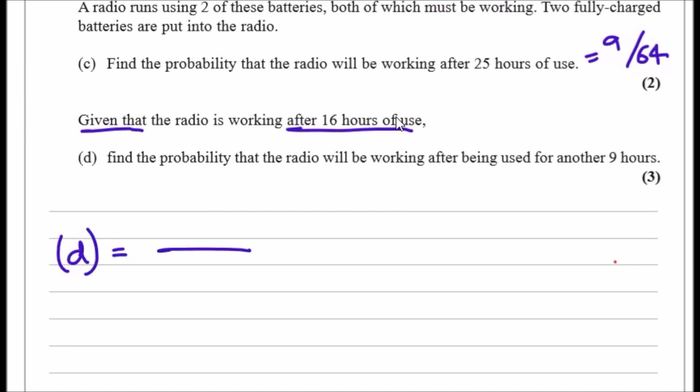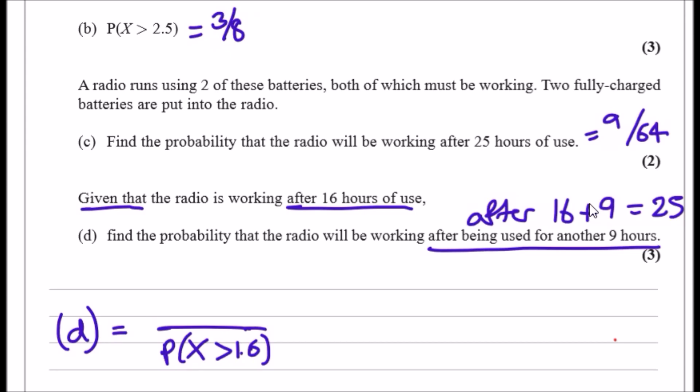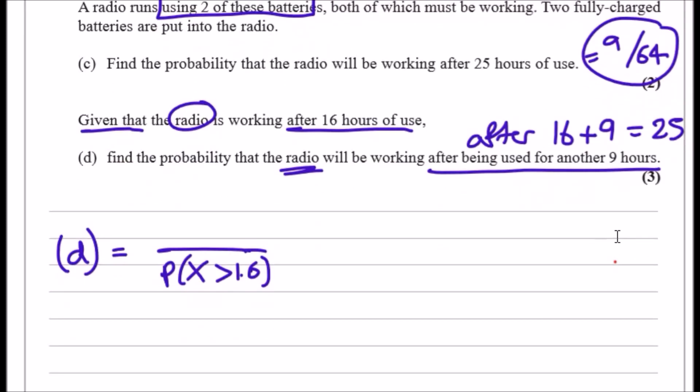Solution for d: the given part would be X > 1.6, so we need to solve that. For the numerator, 'another 9 hours' literally means after the original 16 plus 9 hours, which is 25—what we did for b and c. However, be very careful: we're talking specifically about the radio, meaning it requires two batteries. This is a common mistake. We want the radio, which is 9/64, officially written as P(X > 2.5)².